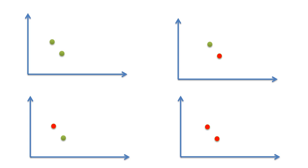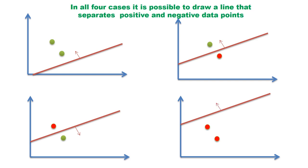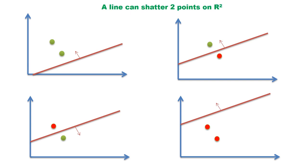Let us go back to the scatter plot with two points. Assume that the classifier is a straight line. In case one, draw a straight line below the two points. The model classifies all points above the line as positive and below as negative — so both points are correctly classified. In case two, draw a line between the two points — the points are correctly classified. In case three, draw the line between the two points, with all points above as negative and below as positive — again correctly classified. In case four, data points can be correctly classified by drawing the line above both points. So it is possible to draw a line separating positive and negative points in all four cases, meaning straight lines are expressive enough to shatter two points on a two-dimensional plane.